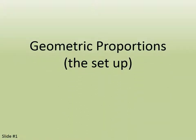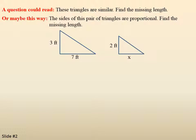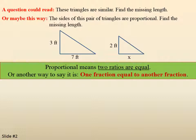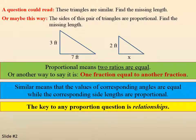A question could read: 'These triangles are similar, find the missing length,' or 'The sides of this pair of triangles are proportional, find the missing length.' Proportional means two ratios are equal, or one fraction equal to another fraction. Similar means that the values of corresponding angles are equal while the corresponding side lengths are proportional. The key to any proportion question is relationships.